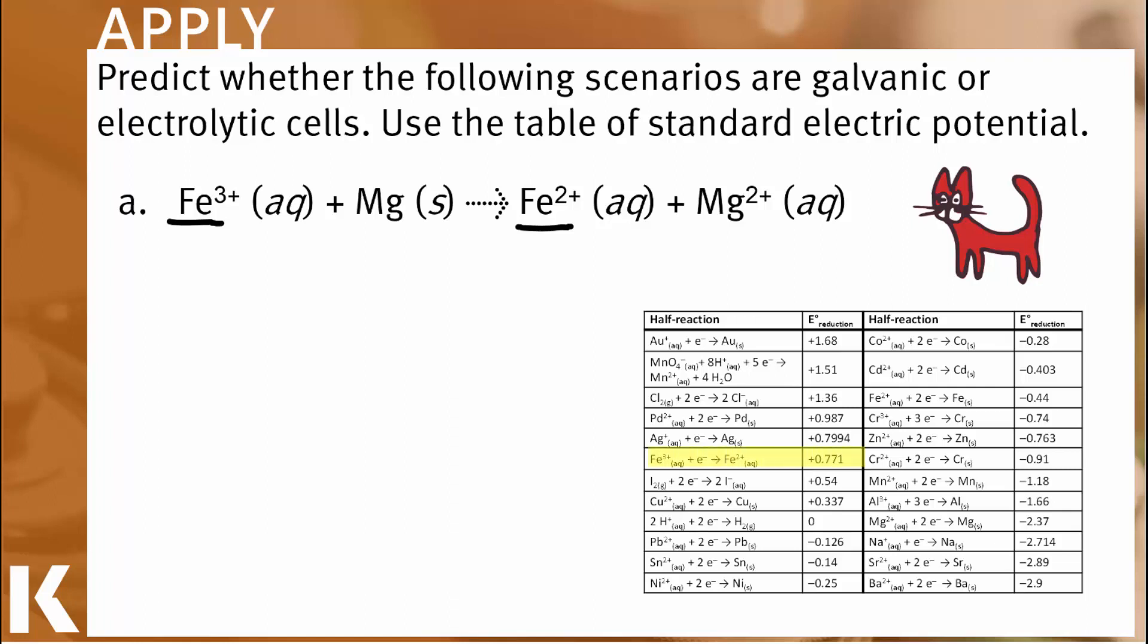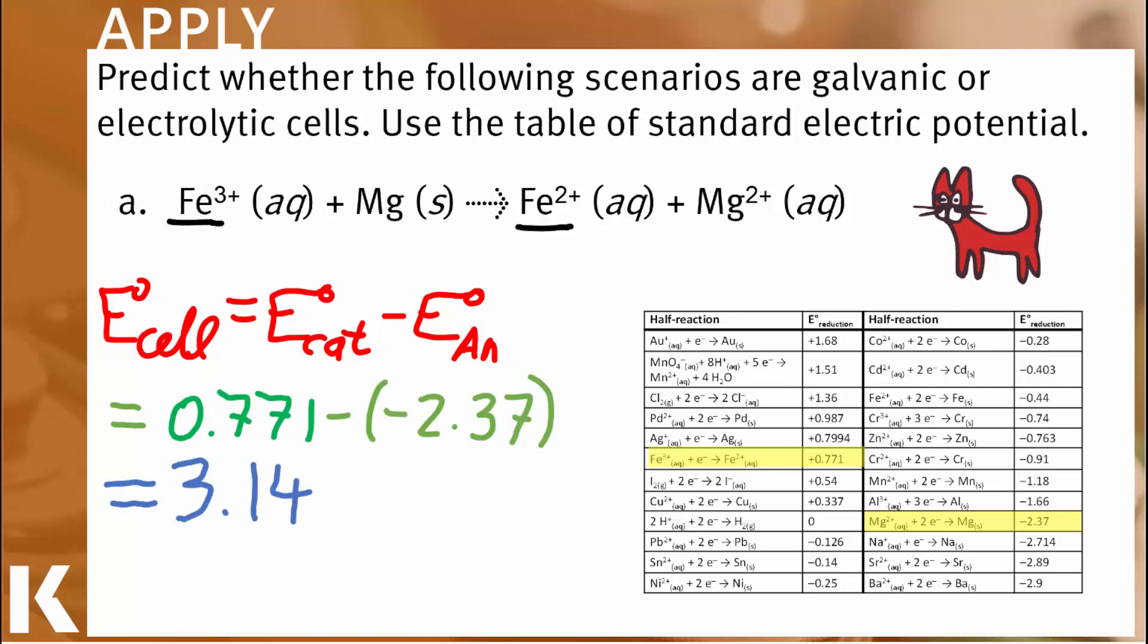This is true for electrolytic cells and for galvanic cells. So therefore, we know that iron is acting as the cathode. Let's look at the cell potentials here for these half reactions. And we see that for the iron reaction, the reduction potential is positive 0.771. And for the magnesium half reaction, the reduction potential is negative 2.37. So we put those into our equation that the overall potential is the cathode minus the anode. There's the calculation, and you do the arithmetic, and we see that the overall cell has a potential of positive 3.14 volts. Therefore, this is a galvanic cell.